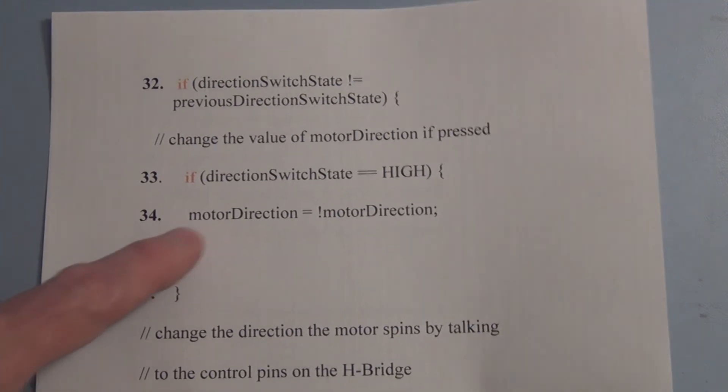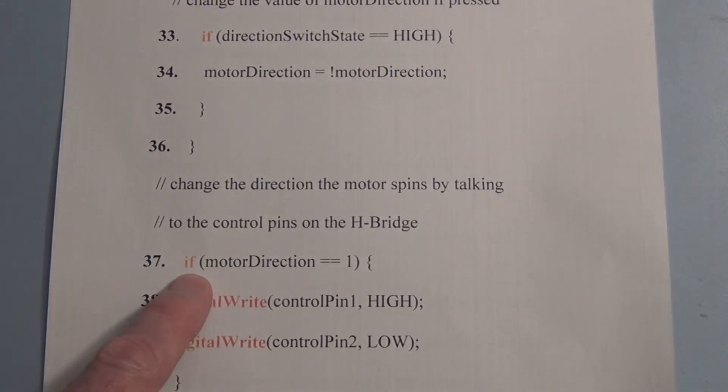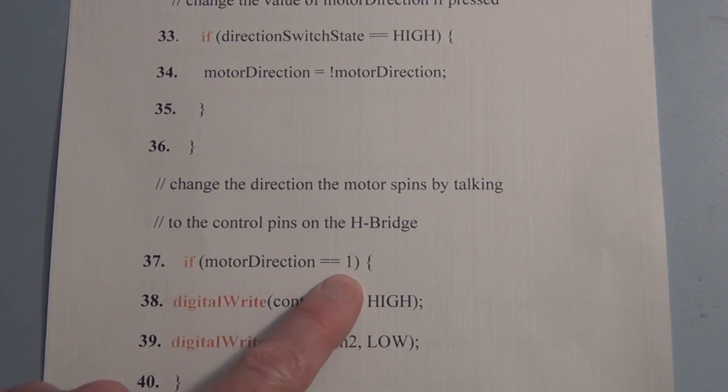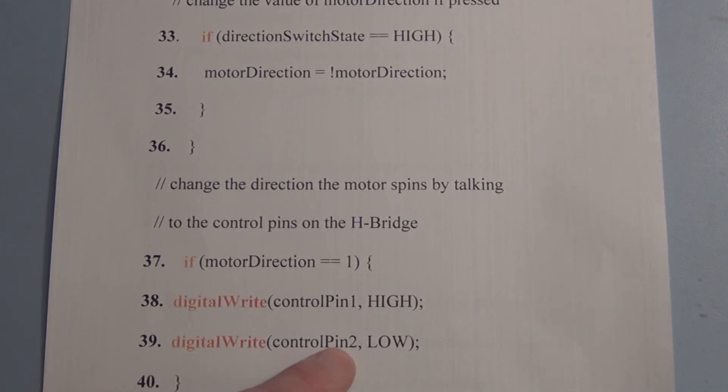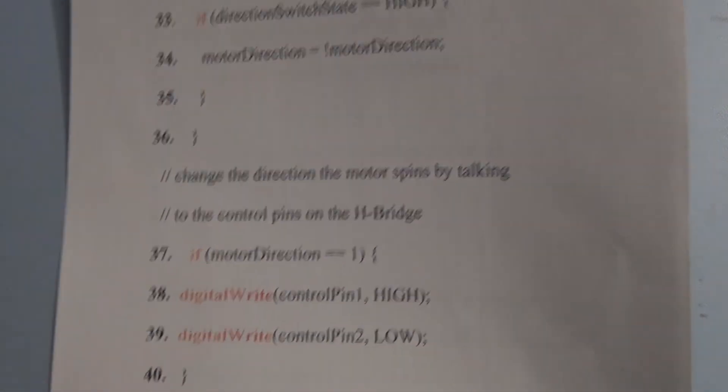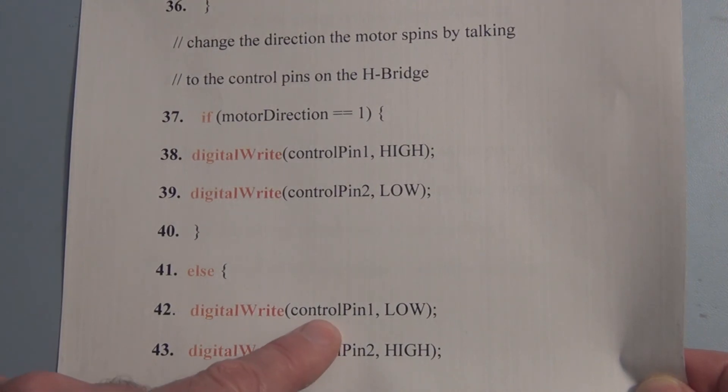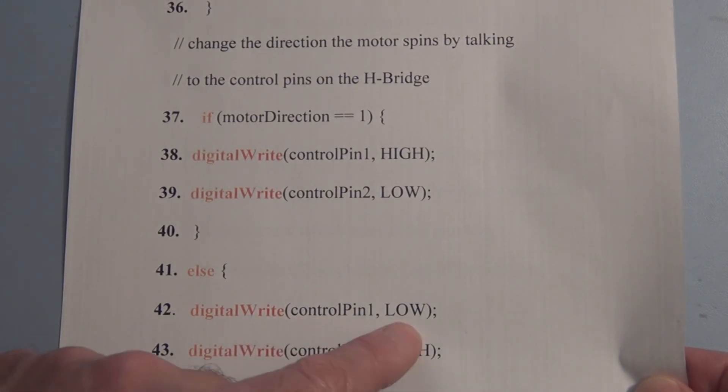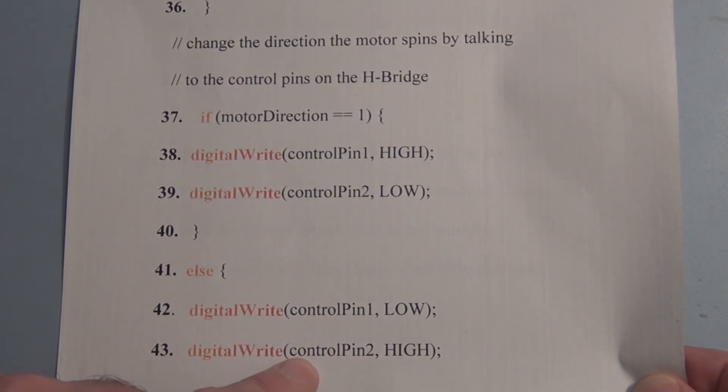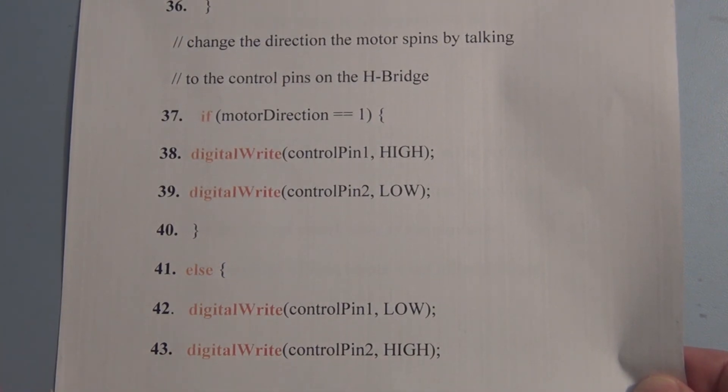So whatever value is currently in motor direction gets inverted and stored in motor direction then based on that value in motor direction. We check to see if that value is equal to one if it is we digital write control pin one high and we digital write control pin two low if it is not equal to one we do this else statement and we do the opposite we set control pin one to low and control pin two to high to reverse direction.